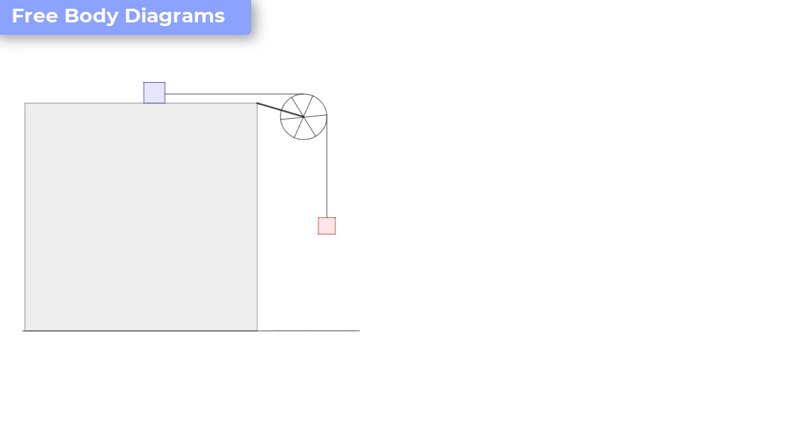And the setup we have here is a block of mass M of 3.3 kilograms that can freely slide on a frictionless table which is attached to another mass m of 2.1 kilogram that is hanging from the side of the table.